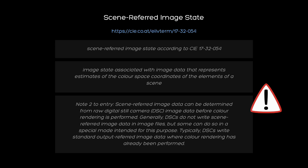Generally, those digital still cameras do not write scene-referred image data in image files, but some can do so in a special mode intended for this purpose. Typically, digital still cameras write standard output-referred image data where color rendering has already been performed. Already here we can see a big discrepancy between the definition and how it is actually used in our field.